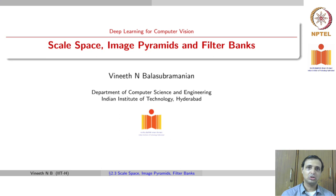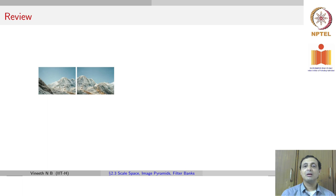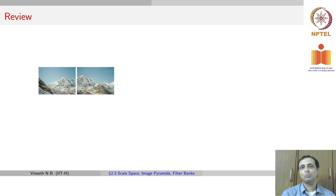That is, what would have been a corner in an image could have been an edge in another image which is zoomed in. Let us try to quickly recall this before we move forward. An application where you would want to detect key points or corners is when you have two different images, and we want to stitch these images together — this is typically called image mosaicing or panorama building.